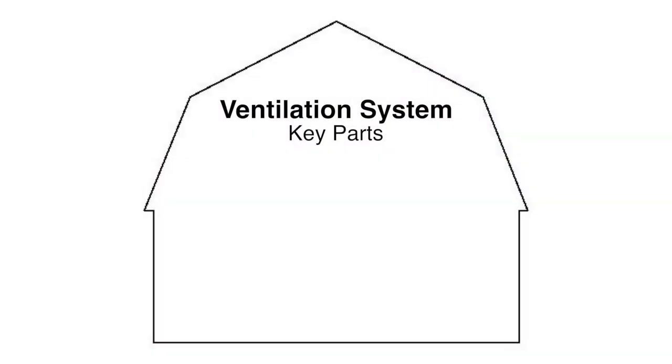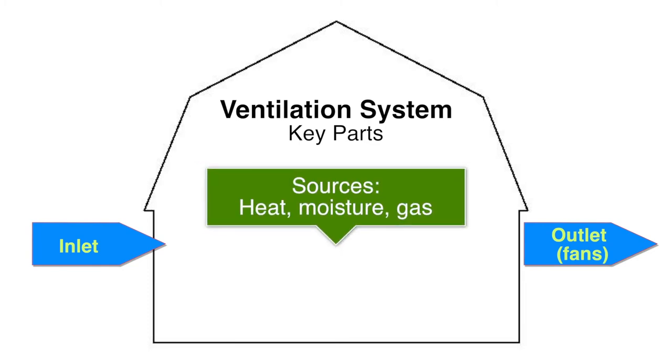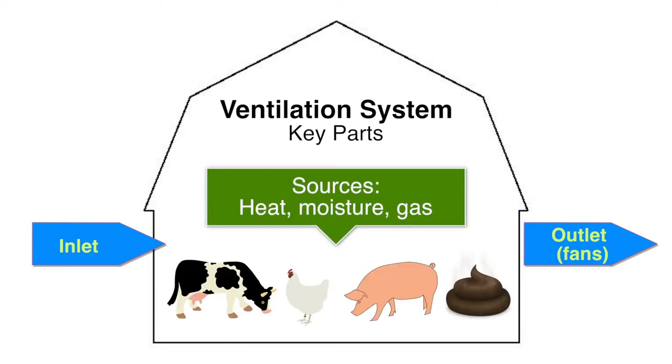There are three key parts to any ventilation system: the inlets, where fresh air comes into the building; the outlets, where stale air leaves the building; and the sources of heat, moisture, and gas, typically the animals and the manure.